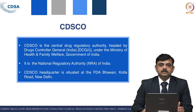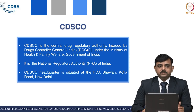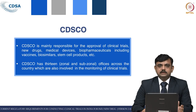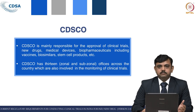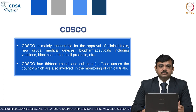CDSCO is the central drug regulatory authority headed by the Drug Controller General of India. This institution is under the DGHS — Director General of Health Services — which is under the Ministry of Health and Family Welfare, Government of India. CDSCO is the national regulatory authority of India. Its headquarters is located at FDA Bhavan, ITO Kotla Road, New Delhi, and is mainly responsible for approval of new drugs, clinical trials, import, export, medical devices and other products. CDSCO is supported by 13 zonal and sub-zonal offices across the country, which are also involved in monitoring clinical trials.